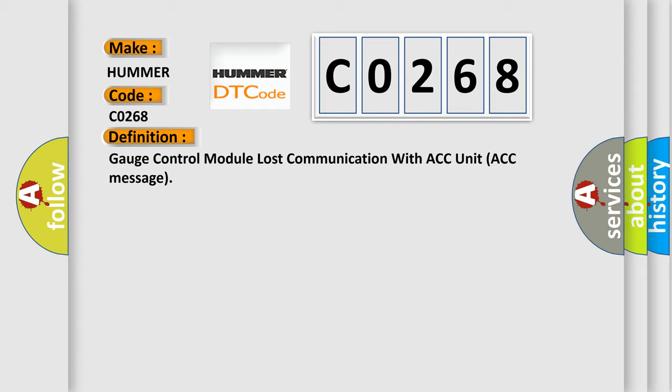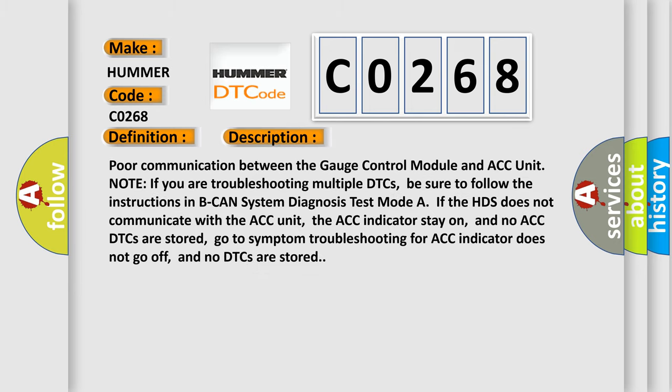And now this is a short description of this DTC code. Poor communication between the gauge control module and ACC unit. Note if you are troubleshooting multiple DTCs, be sure to follow the instructions in BCAN system diagnosis test mode. If the HDS does not communicate with ACC unit, the ACC indicator stays on, and no ACC DTCs are stored, go to symptom troubleshooting for ACC indicator does not go off, and no DTCs are stored.